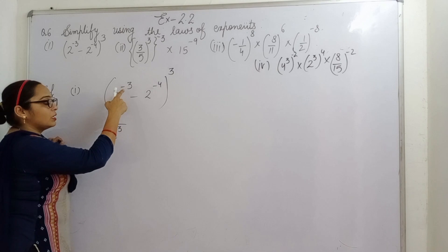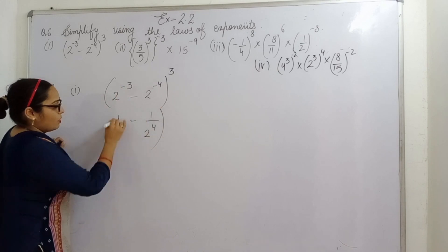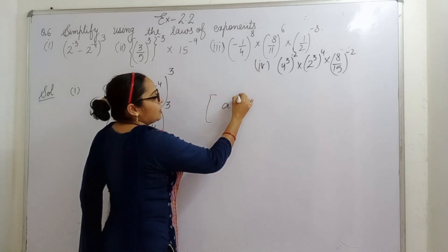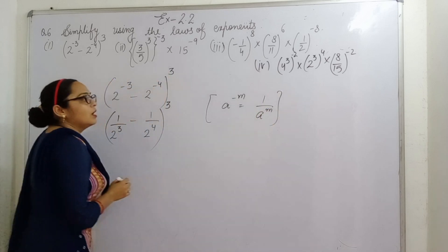It is negative power positive but it is also 2 raised to power. We'll use which law of exponent? That a raised to power minus m is 1 by a raised to power m.